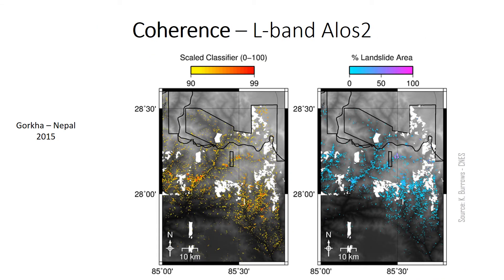The fourth product is coherence. On the left, areas are classified based on coherence changes measured for the 2015 Gorkha Nepal earthquake using L-band ALOS-2 data, compared to the landslide area density for the event based on an optical inventory.